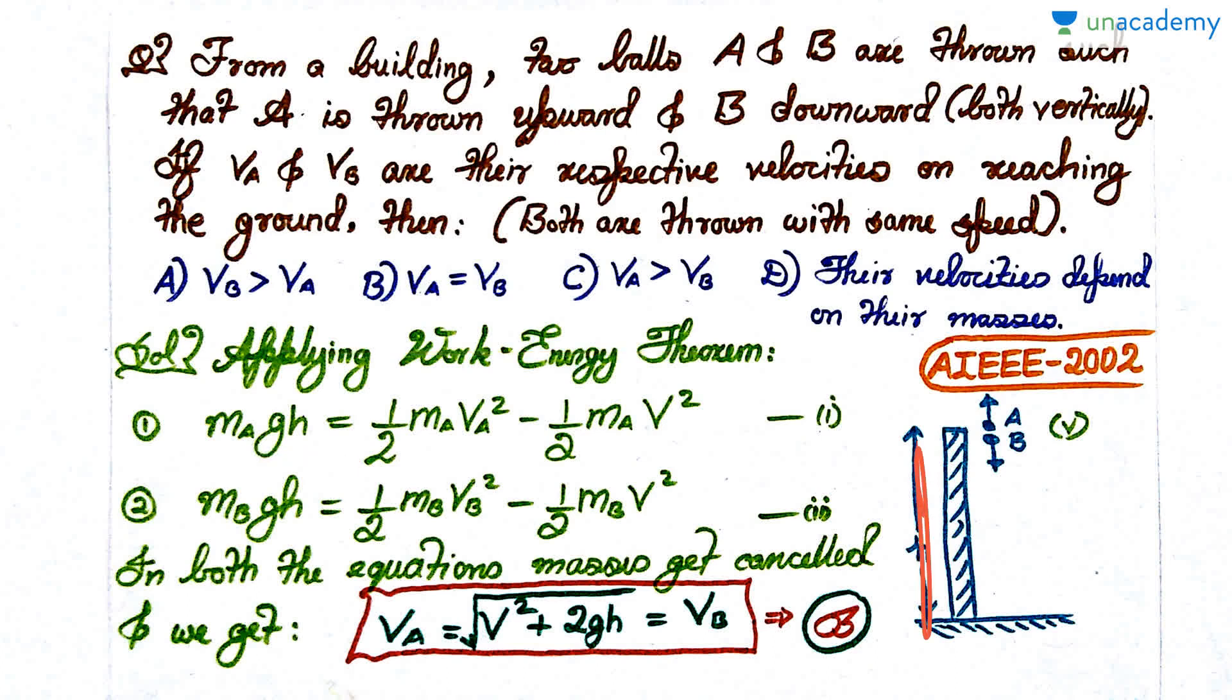I apply work energy theorem and I'll get work done by gravity mgh, where H is the height of the tower, equal to change in kinetic energy: half mVA² minus half mV². The same equation for B. When I solve these two equations, masses get cancelled.